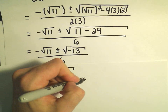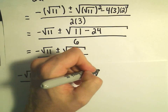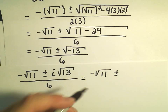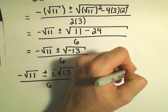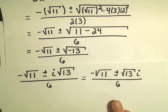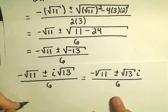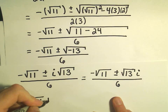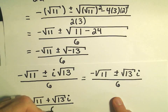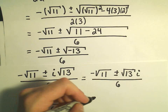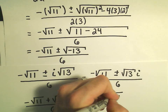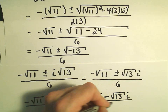The more common way to write complex numbers: we have negative the square root of 11, plus or minus — typically you put the numerical part first — so square root of 13 times i, over 6. Breaking this into two separate statements: one solution is negative square root of 11 plus square root of 13 times i, all over 6. The other solution is negative square root of 11 minus square root of 13 times i, divided by 6.